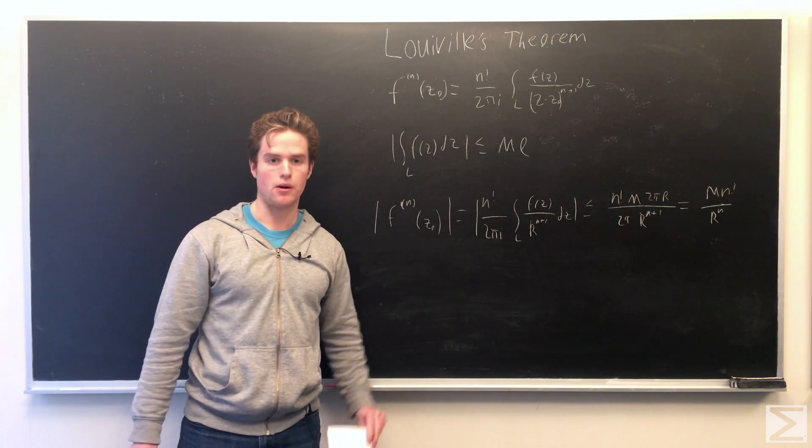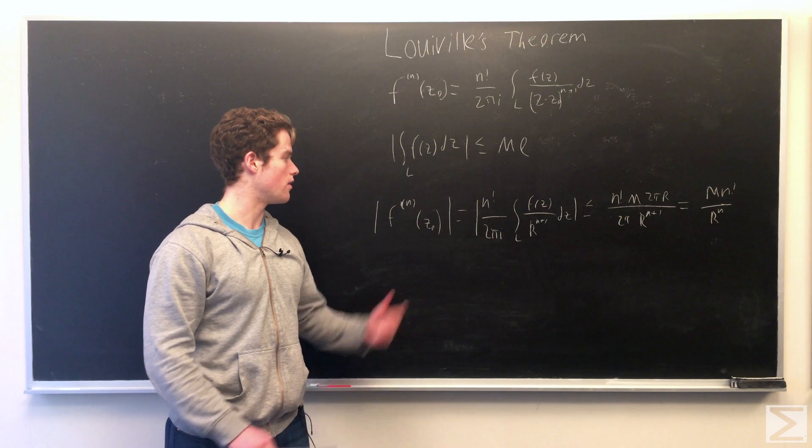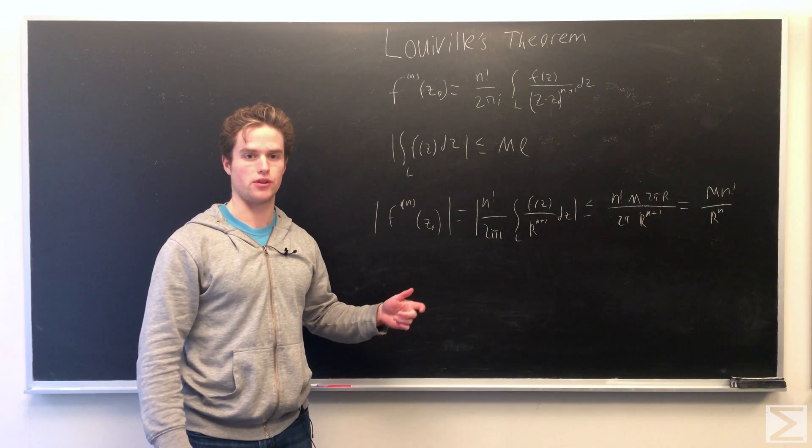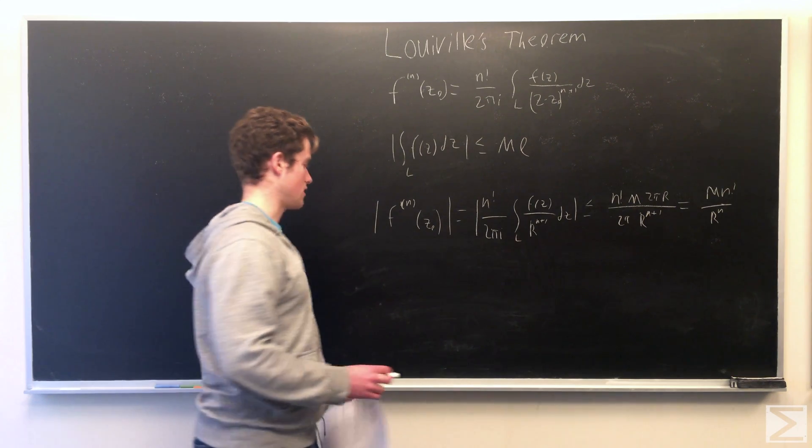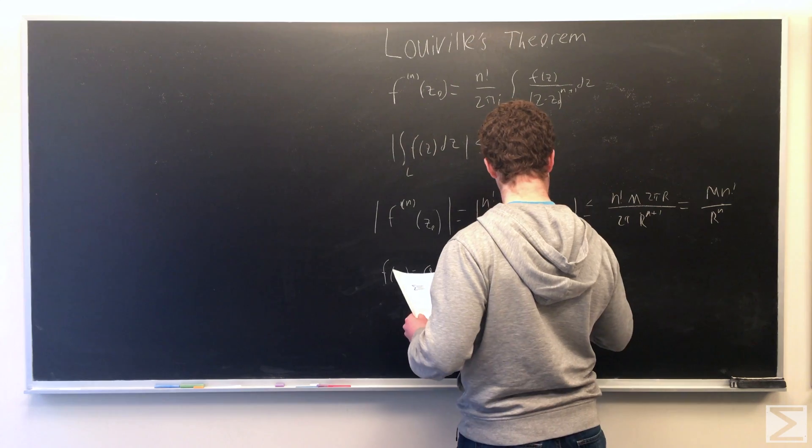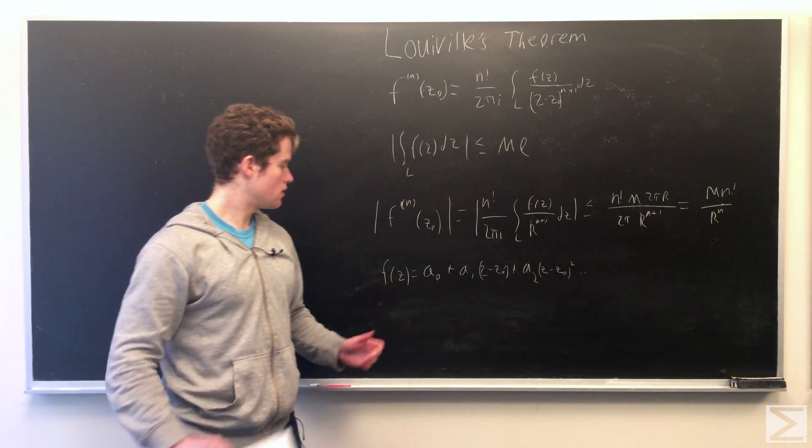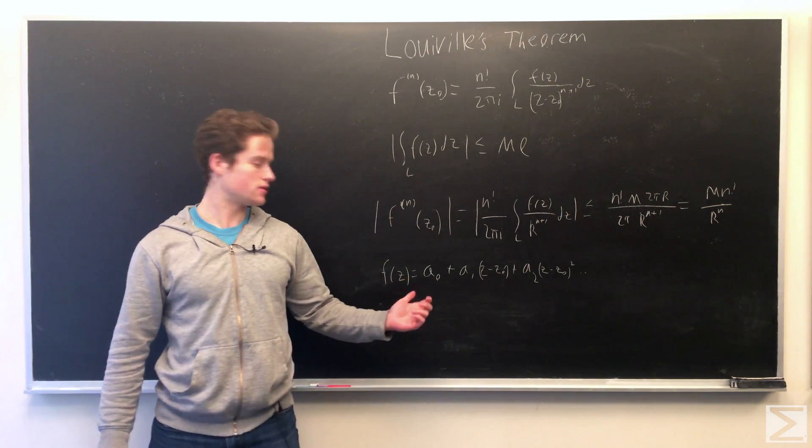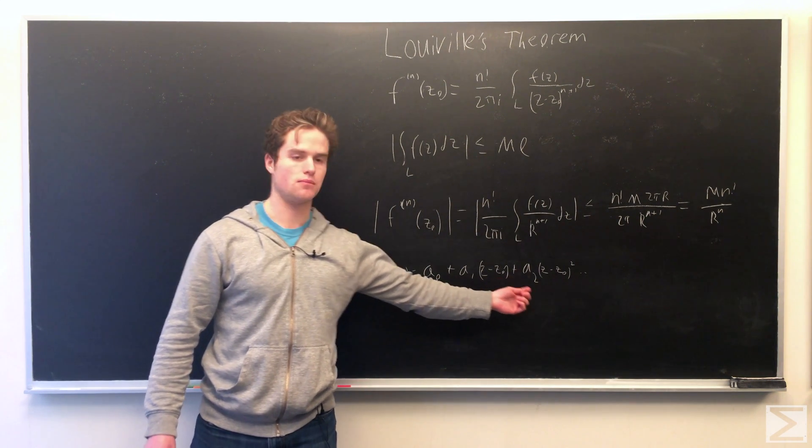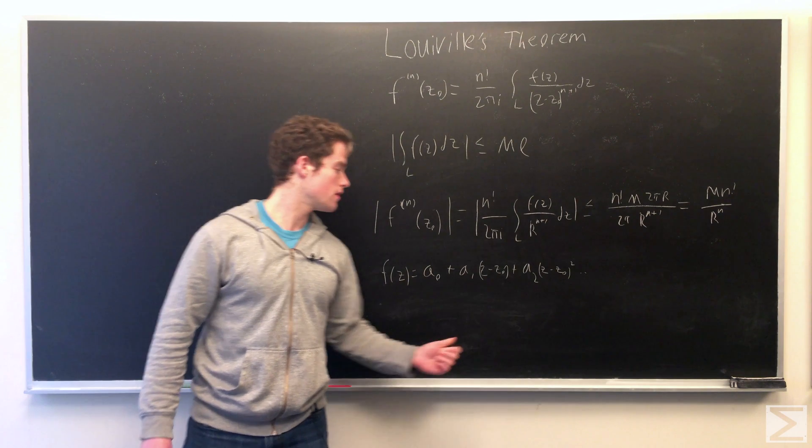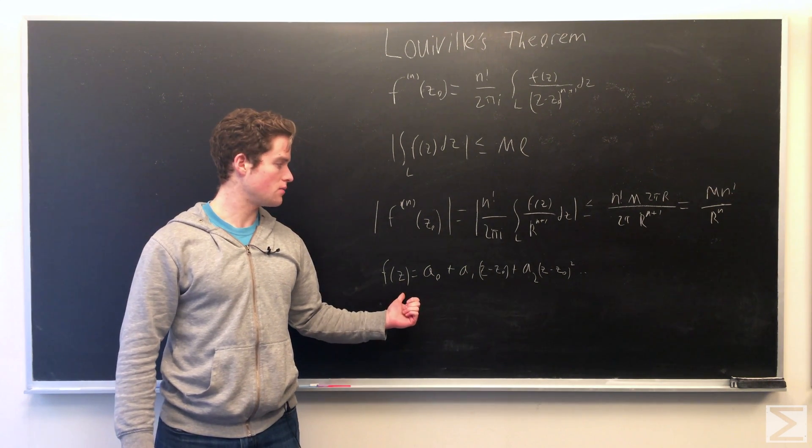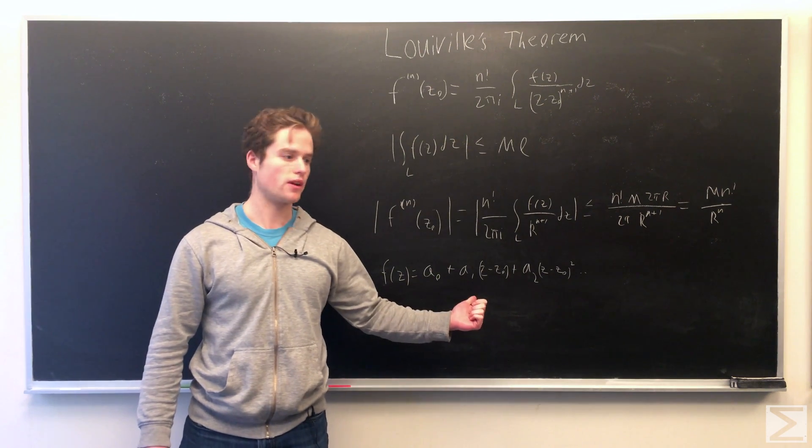So now we're going to consider a power series expansion of f(z), which we have since f(z) is analytical in the domain we're looking at. So expanding out f(z) in the power series, a₀ + a₁(z - z₀) + a₂(z - z₀)² and so on. We can note if we differentiate this any k number of times and then plug in z naught, we get a nice simplification.